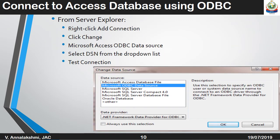To connect an Access database using ODBC, from the Server Explorer right-click and select Add Connection, then click Change and select Microsoft Access ODBC Data Source. From there, select the DSN from the drop-down list box, then choose Test Connection. Once you finish all these steps, it will indicate test connection succeeded. Then click OK.